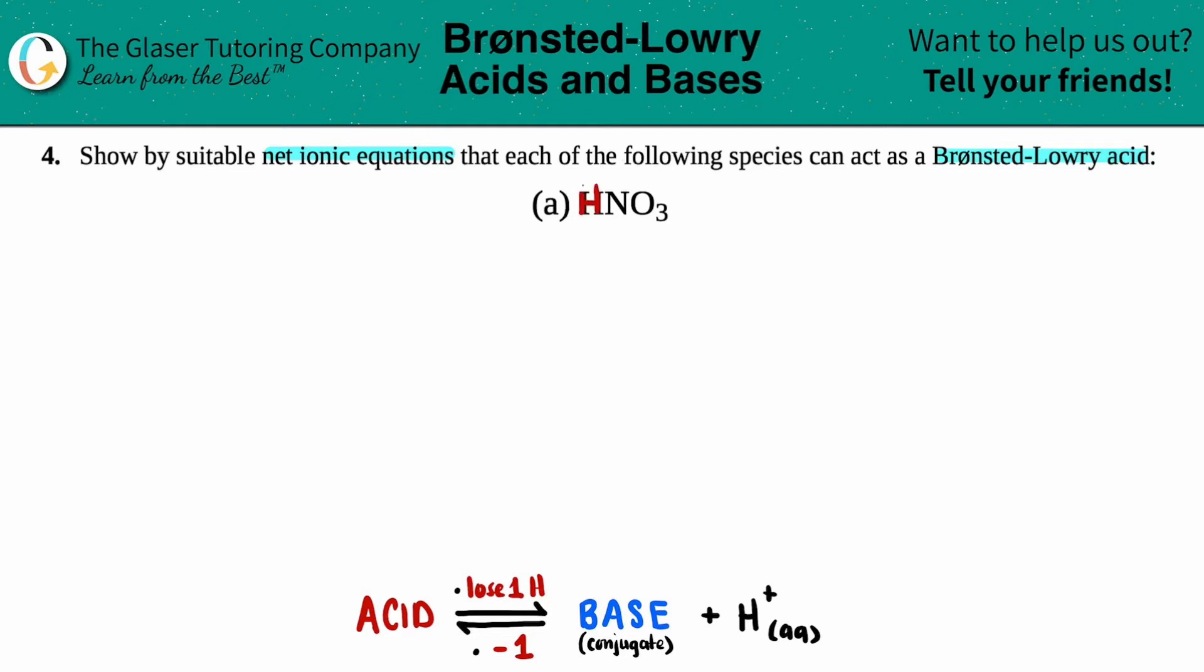So this hydrogen is going to be lost. Now I wrote down the general information that we need to know in terms of the net ionic equation for what Bronsted-Lowry acids do. So an acid will always turn into its conjugate base and there's the hydrogen that gets lost, the hydrogen that was on the acid.